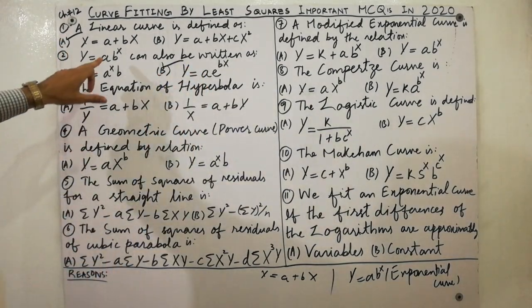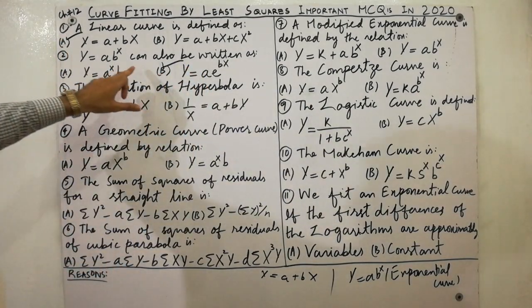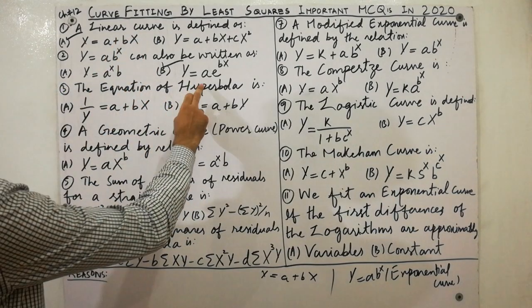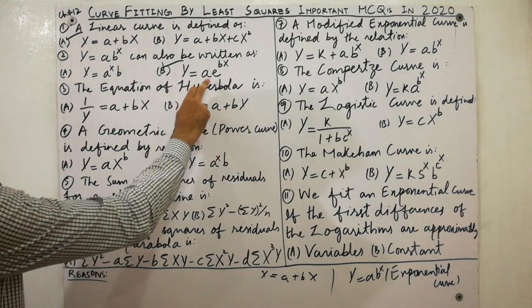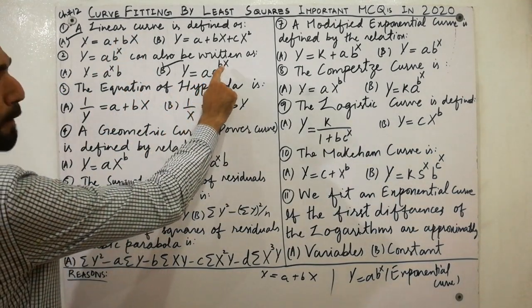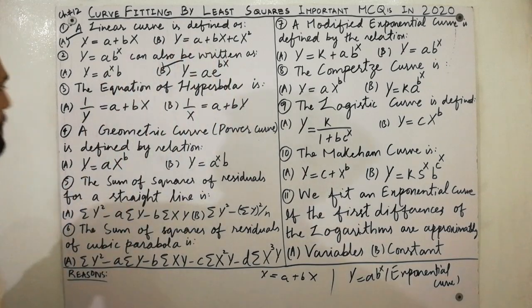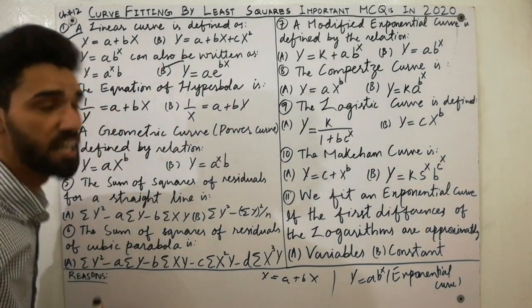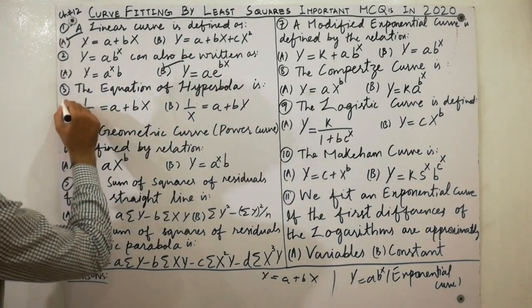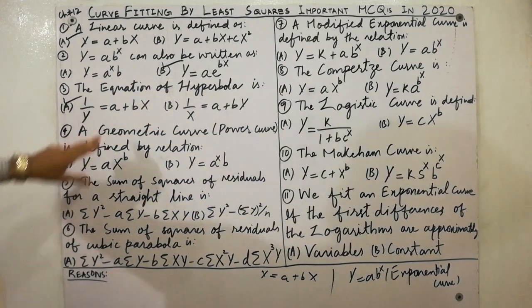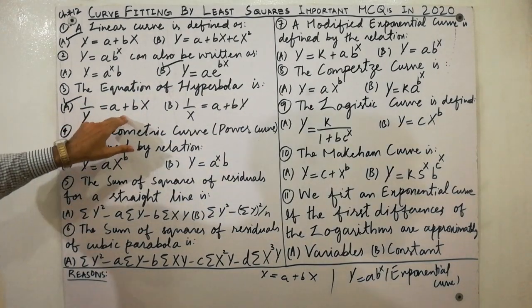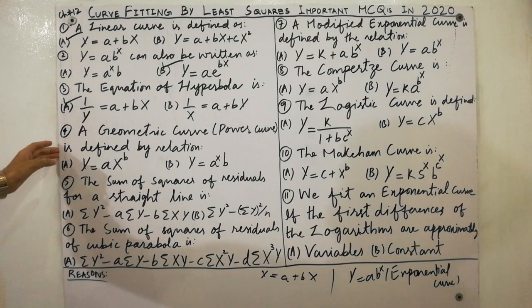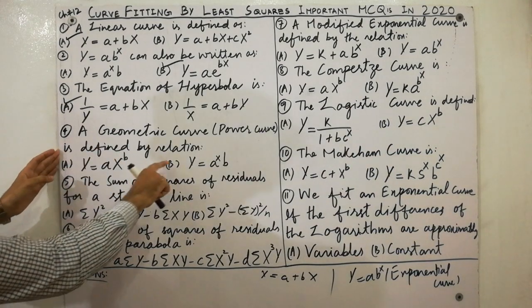The exponential curve equation can also be written as y is equal to a·e raised to the power bx. Next, the equation of a hyperbola is 1 over y is equal to a plus bx — this is a very important point to remember.